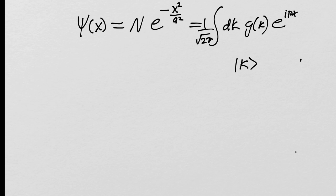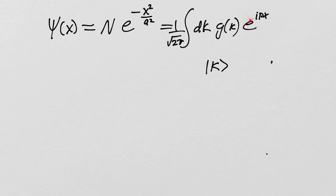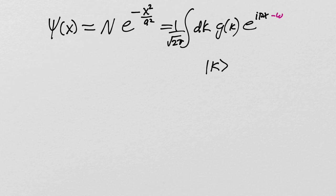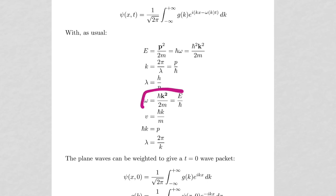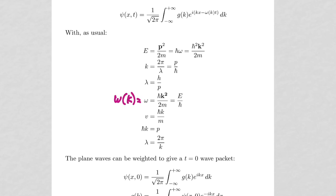To get the time dependence, we just throw in e^{-iω(k)t} on the stationary wave functions. For a free particle, ω(k) = ℏk²/2m. The Gaussian structure here is e^{-x²/a²}, where departing from 0 to a distance a puts you at 1/e from the peak. That's the simplest choice — a gives you the 1/e width of the Gaussian.